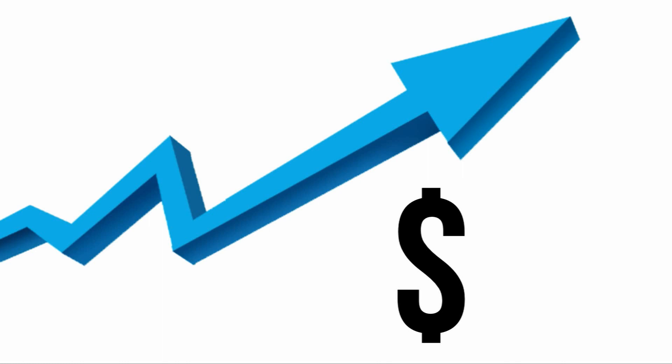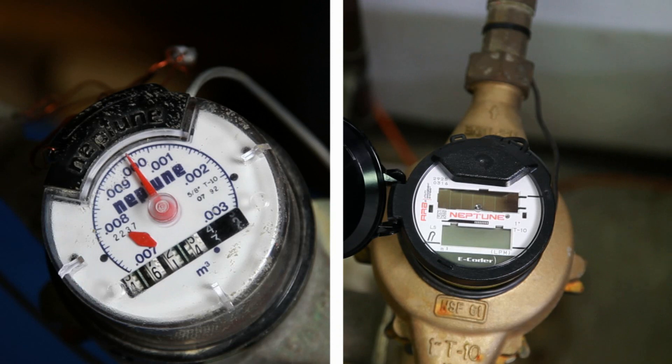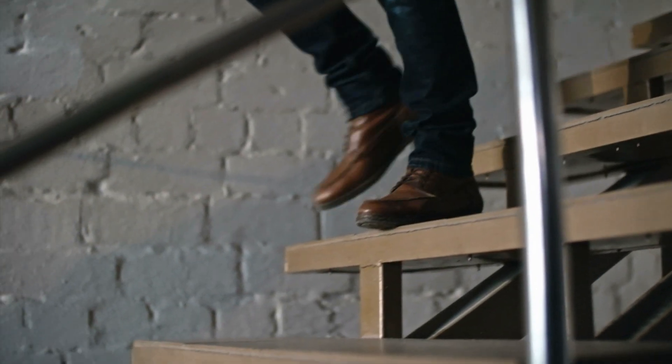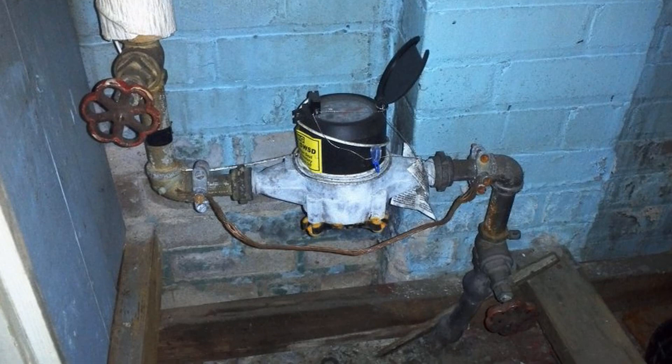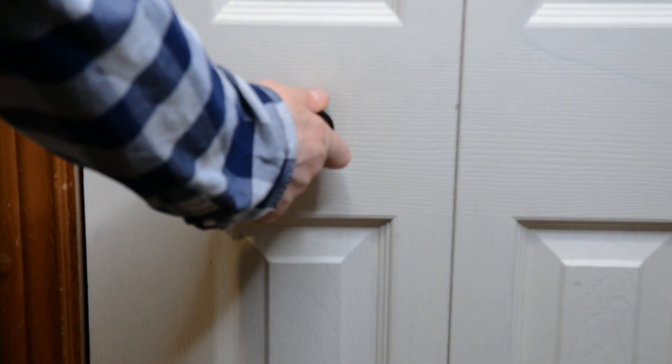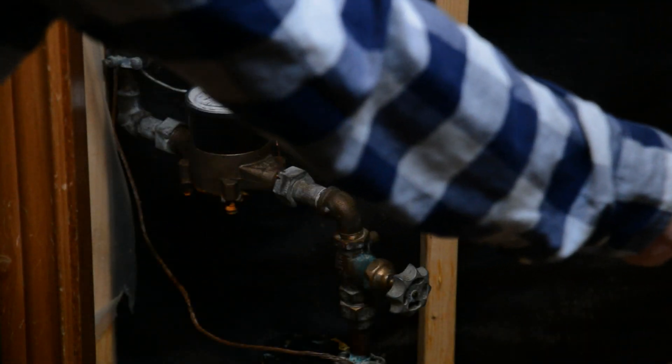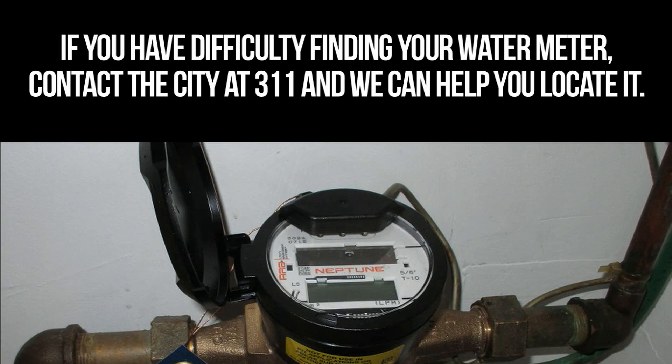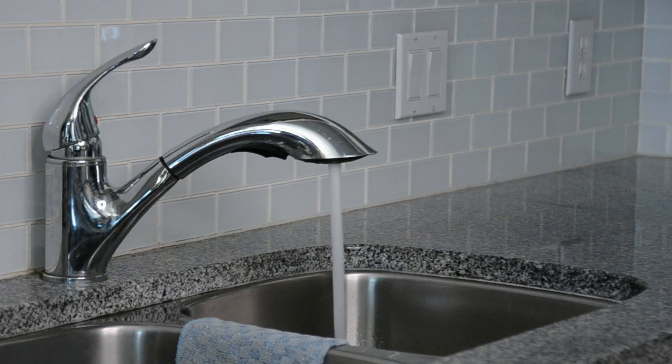Did you know that sometimes a small water leak in your house can cause your water bill to increase dramatically? Let's check to see if you have a water leak. First, let's find your water meter. Water meters are typically located in the basement of your home along the front wall near the floor. Sometimes they might be hidden in cupboards or cabinets built by previous homeowners.